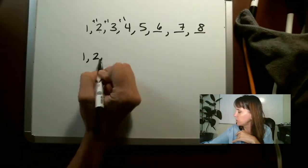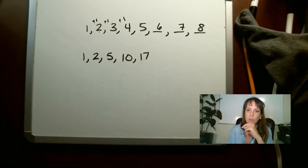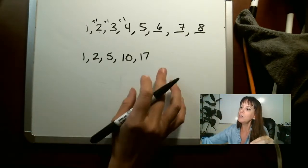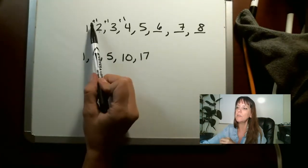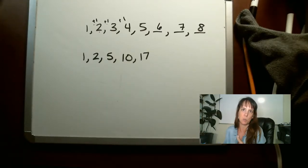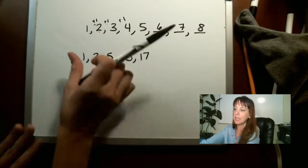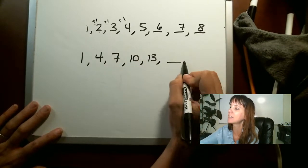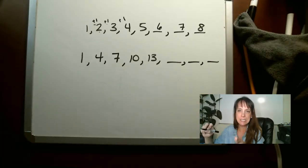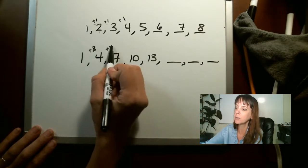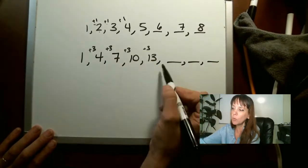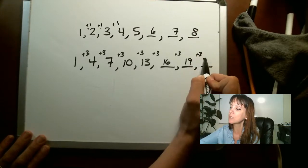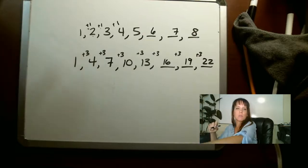That was a pretty easy sequence, but sometimes they can be a little trickier. Let's say we have one, four, seven, ten, thirteen — find the next three. For some of these easier ones, take a look: one plus three gives us four, plus three gives us seven, plus three gives us ten, plus three gives us thirteen. So plus three gives us sixteen, plus three gives us nineteen, plus three gives us twenty-two. Sometimes they're easy like this — you just find the difference between the two numbers.